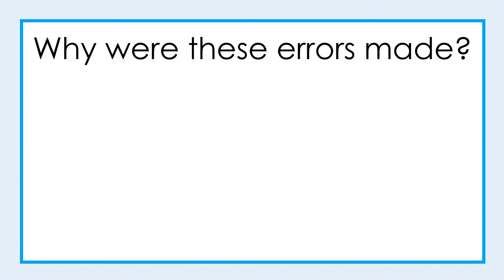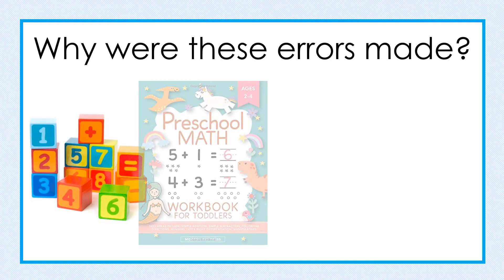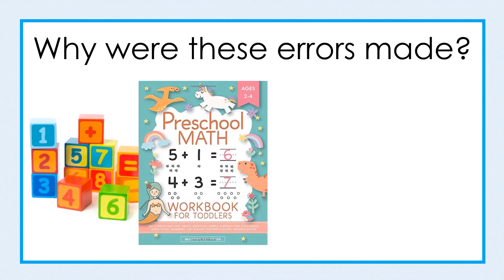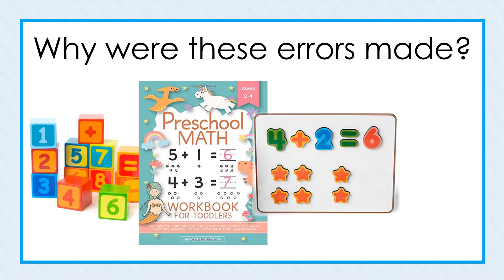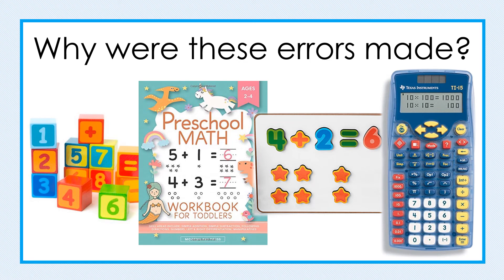Why were these mistakes made? Students generalized based on past experiences. As early as pre-K, students are being shown equations and are encouraged to believe that the equal sign means 'here comes the answer.' Rushing to show students equations can be detrimental. Additionally, in grades 3 through 5, students often use a calculator where the equal sign also has the word 'enter' above it as an indicator to do something.